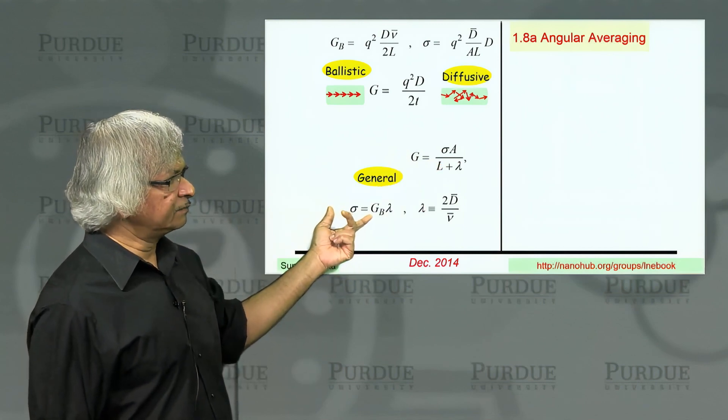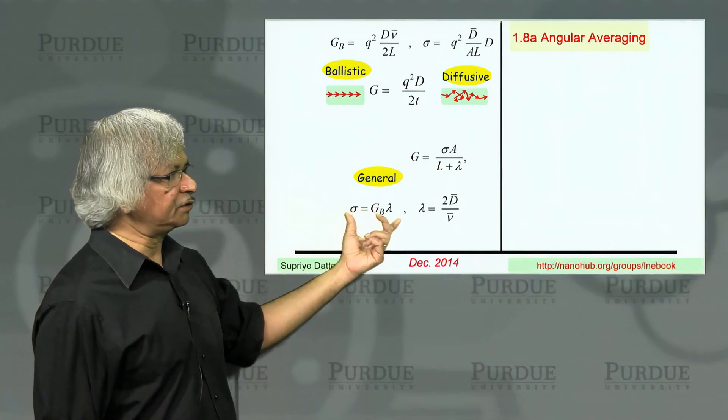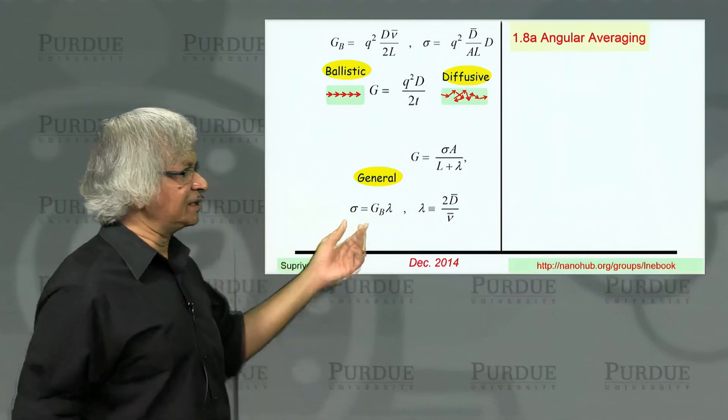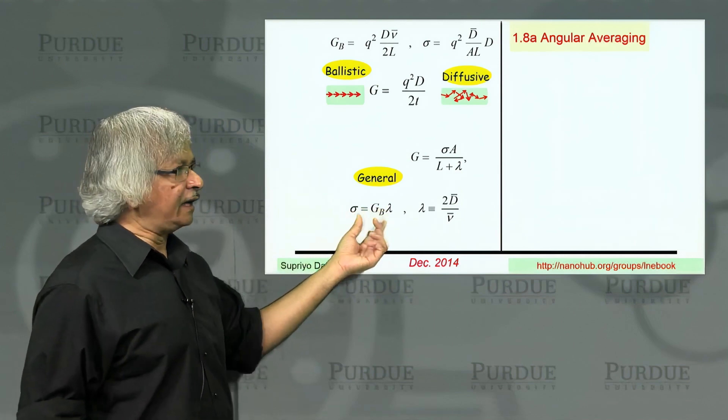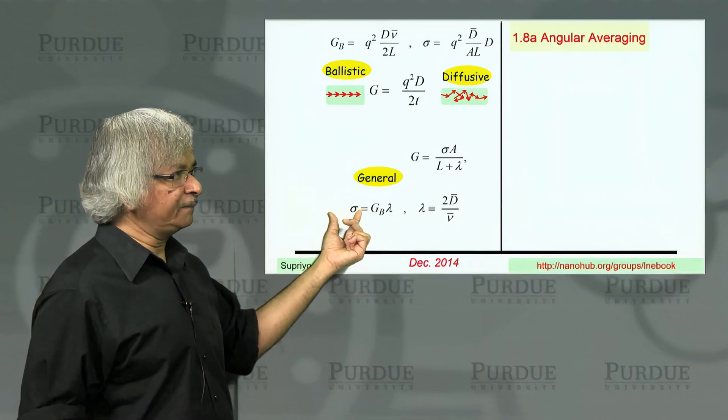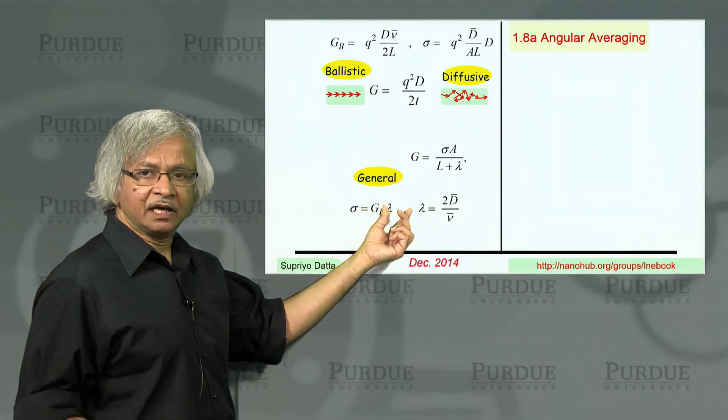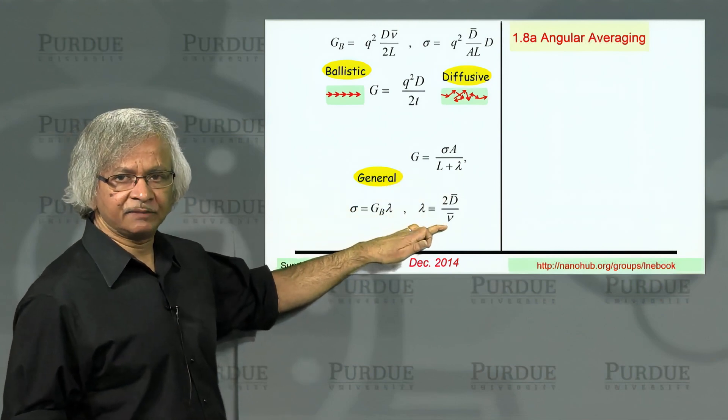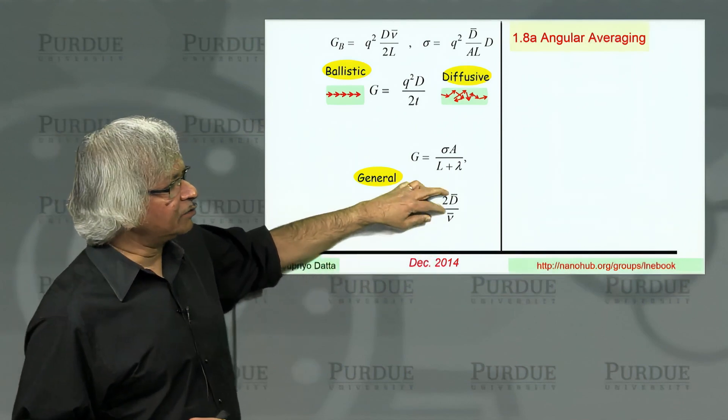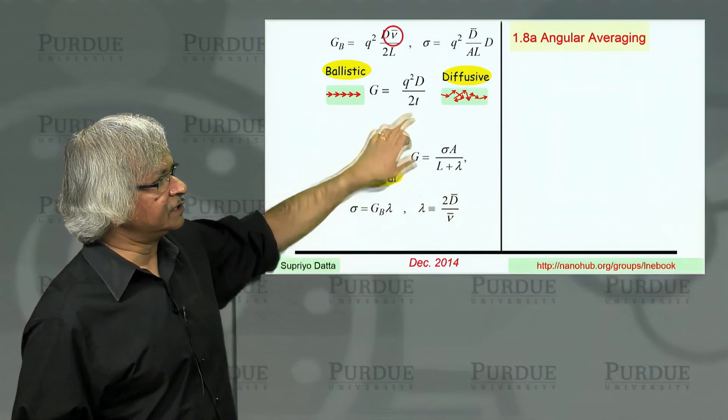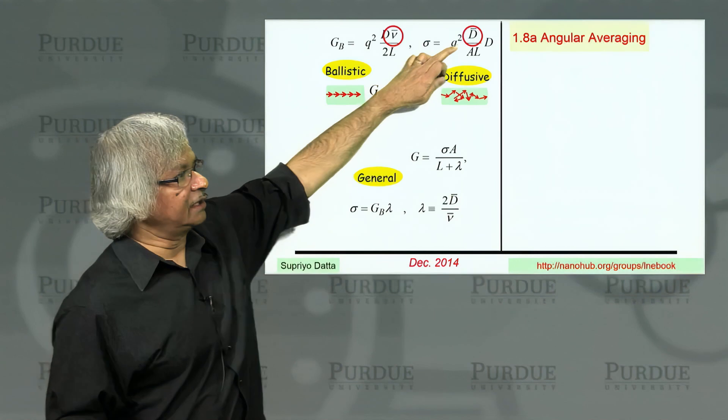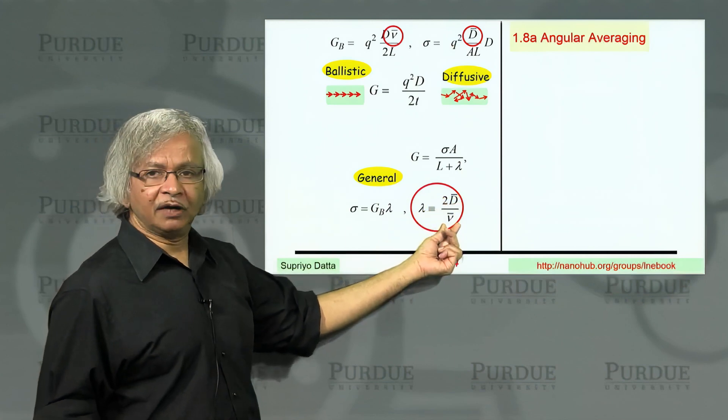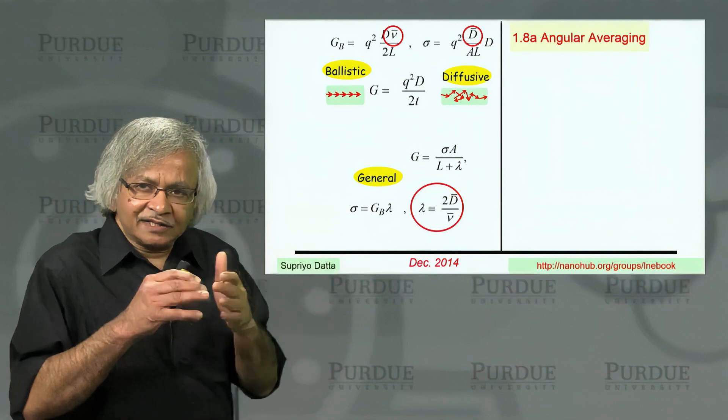And again, I notice there's a little mistake here. This should have been sigma A, and that's equal to GB lambda. And as I mentioned, this is this new perspective we are talking about where the fundamental material parameter is this ballistic conductance. And the conductivity times area, which should have been here, is this ballistic conductance times the mean free path, this lambda, which we defined as the ratio of this diffusion coefficient to the average velocity.